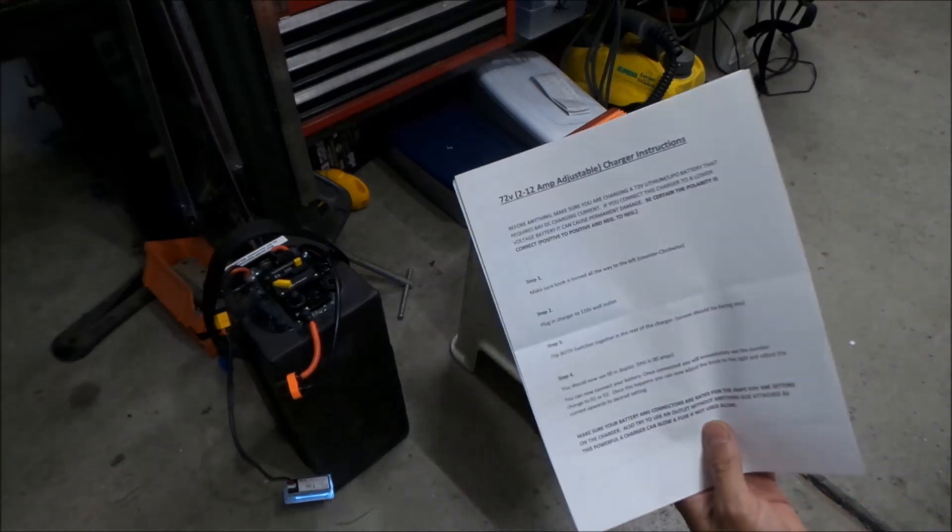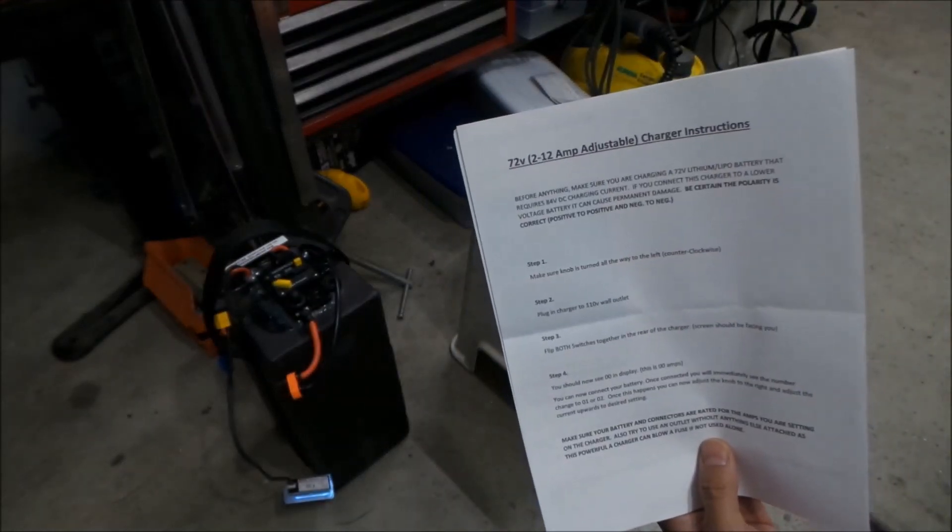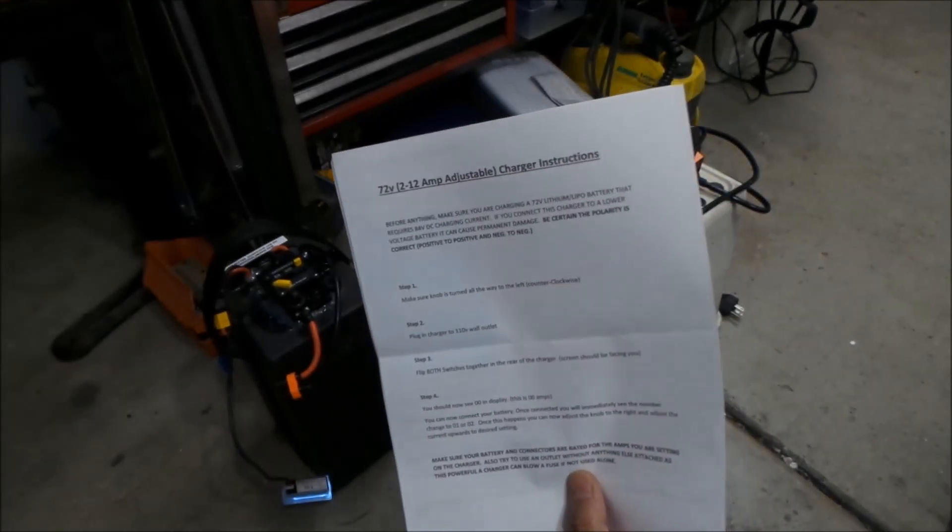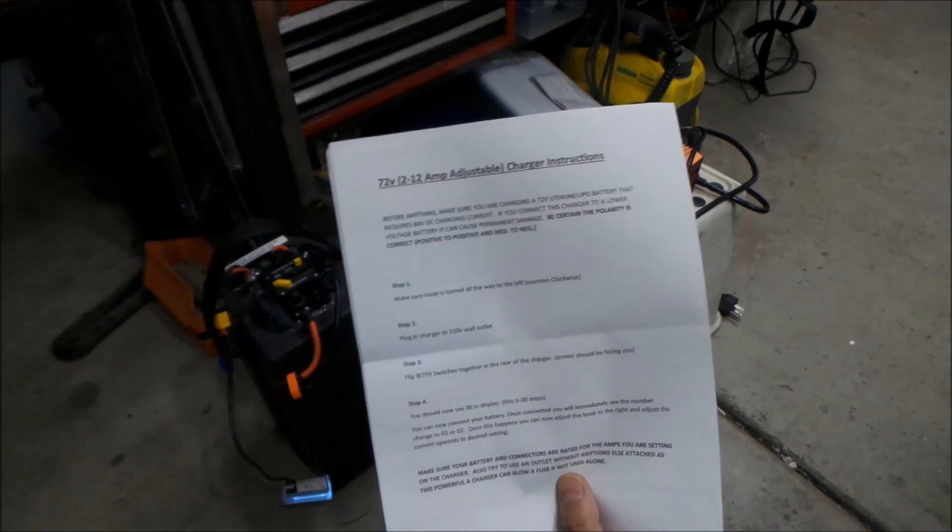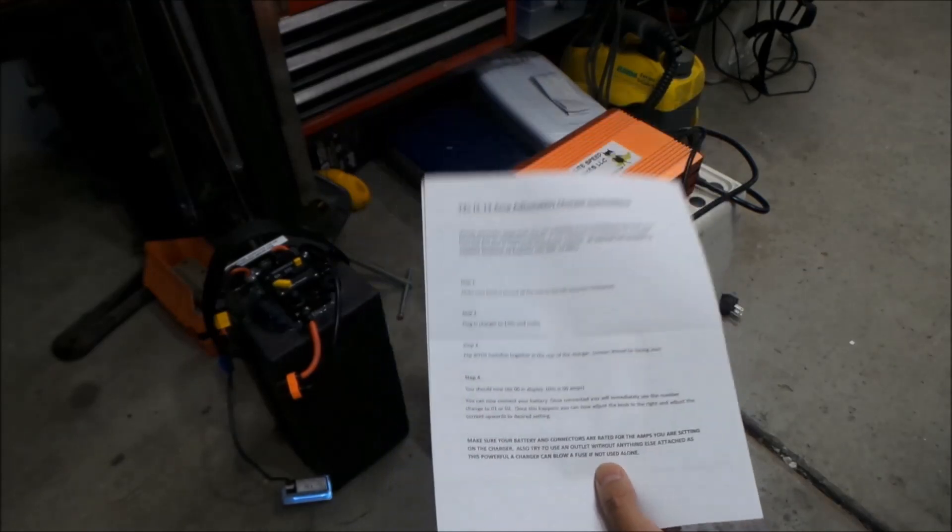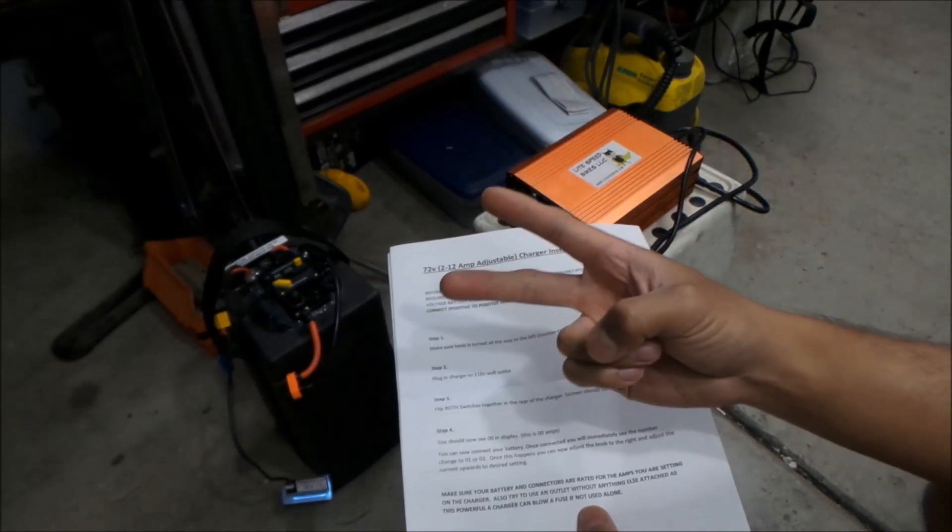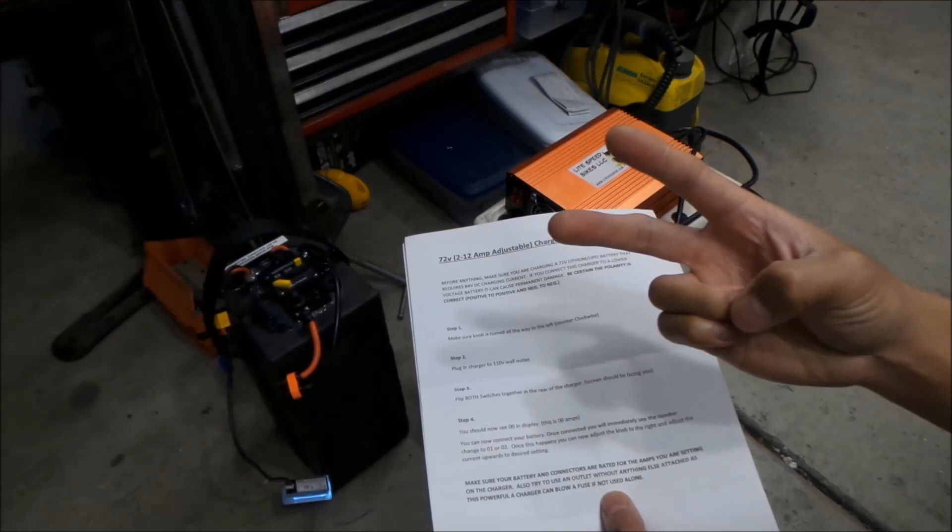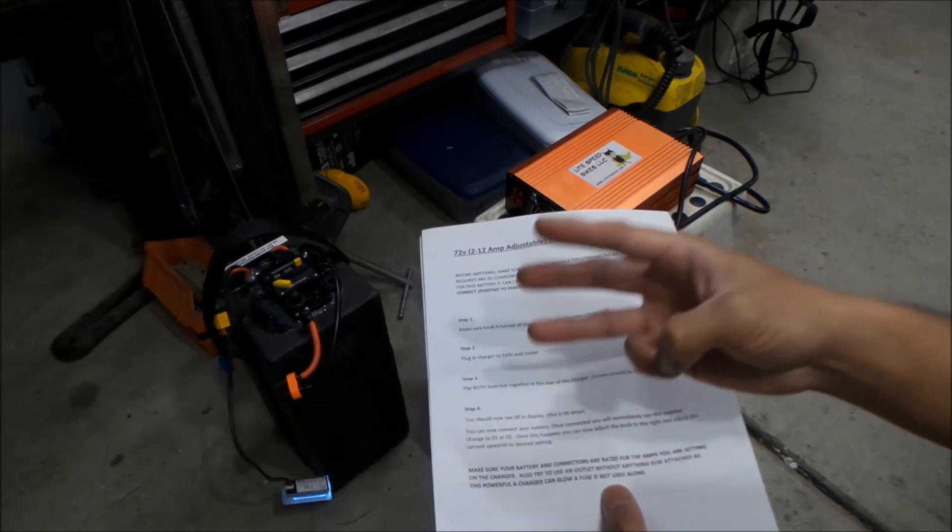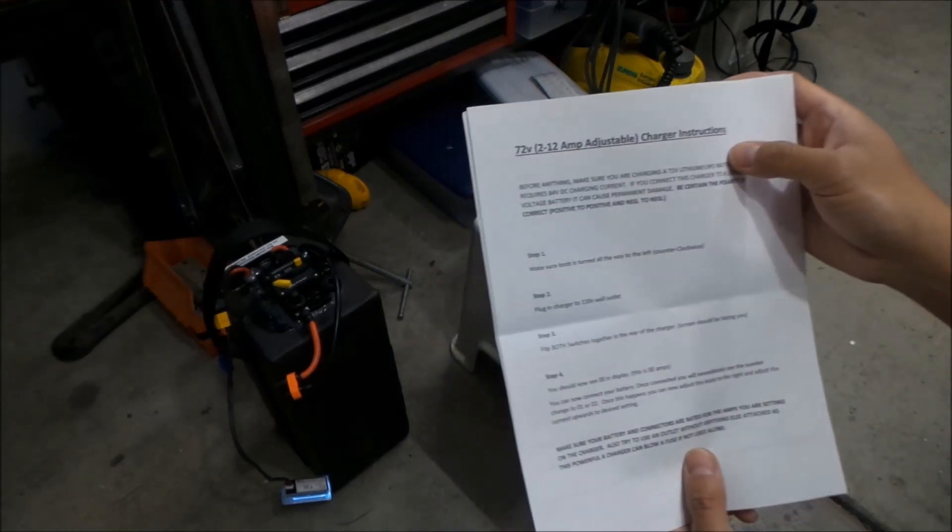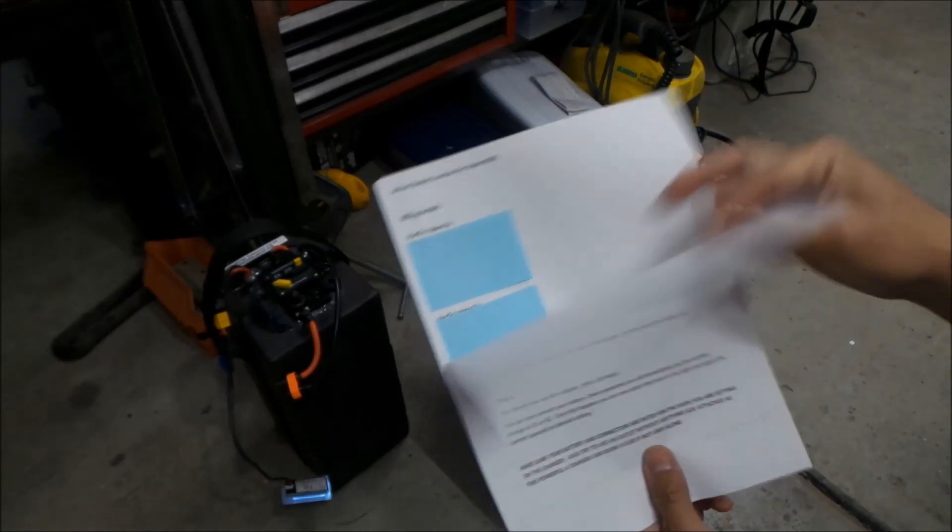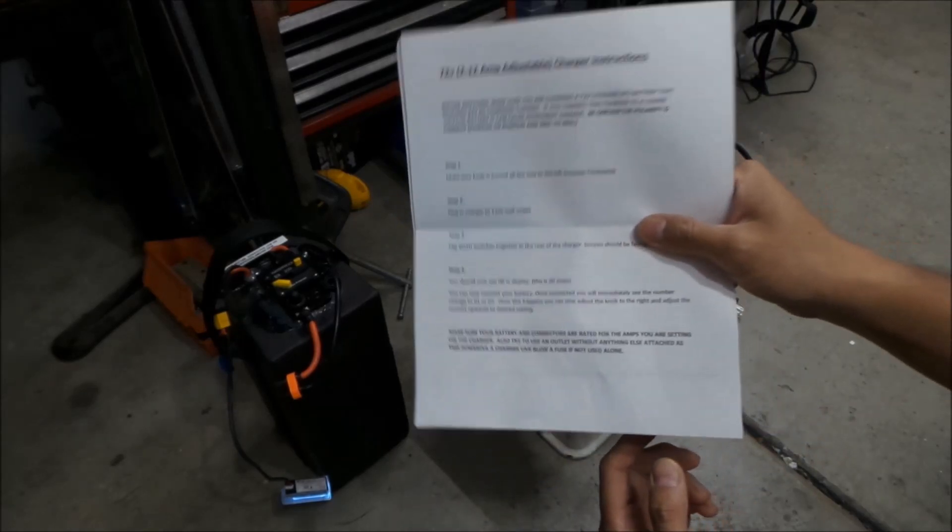Alright, so anyway, we'll do it by the instructions first and we'll play around with the charger. And then what we'll do is I will hook it up to a variety of different sources. So right now we're just going to hook it up to a regular power source. I'm going to see if it works with my 2000 watt generator. And then I'm going to see if it works with my van's inverter. I have a 400 watt inverter. So this can charge anywhere from, from what I remember, it was two amps to 12 amps.